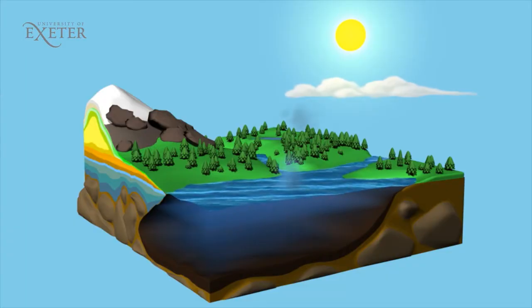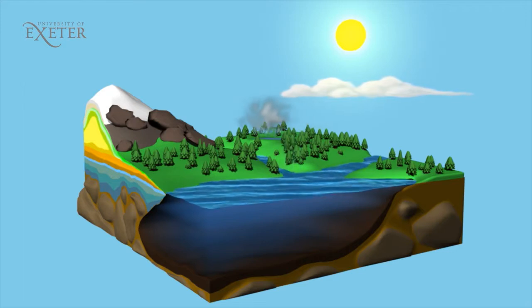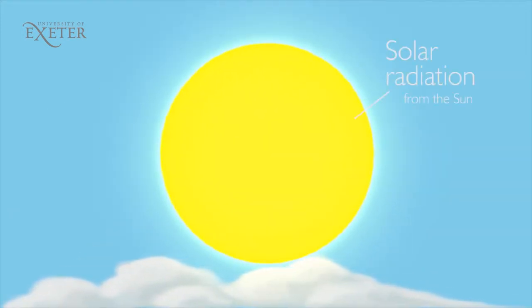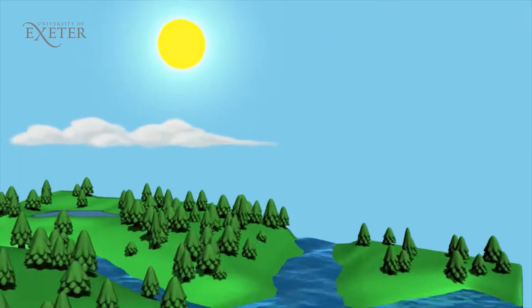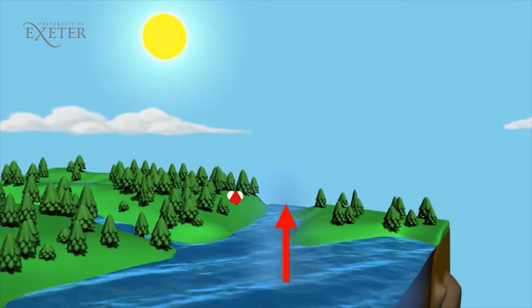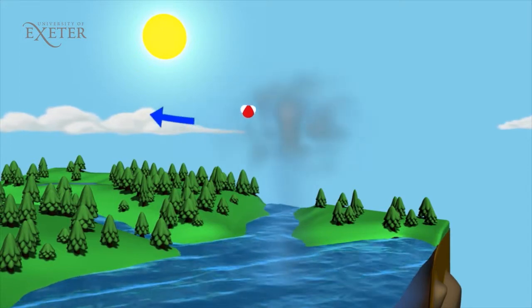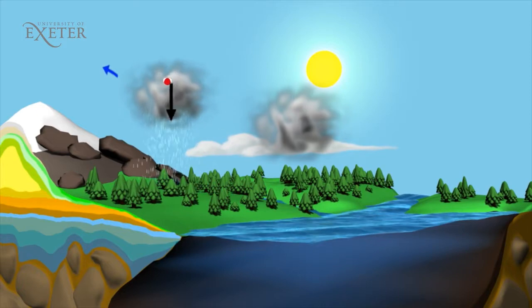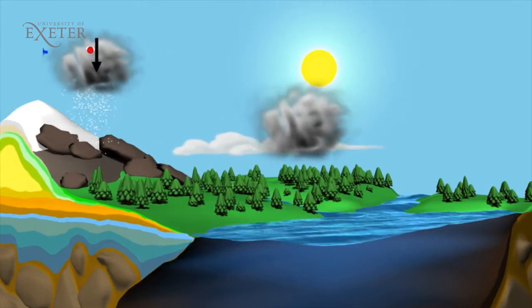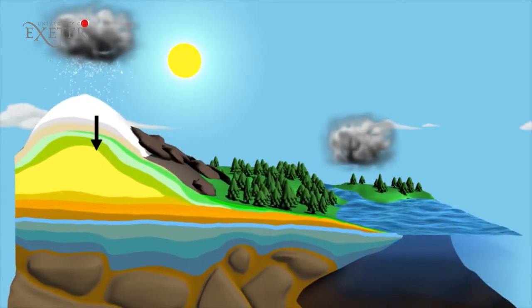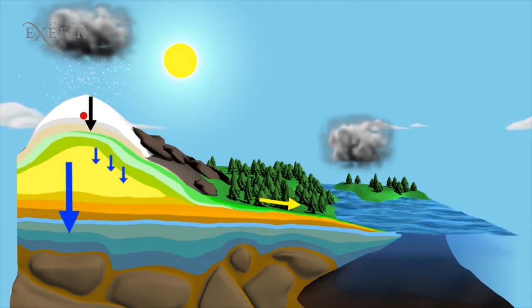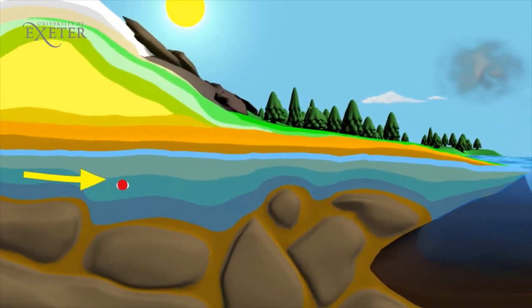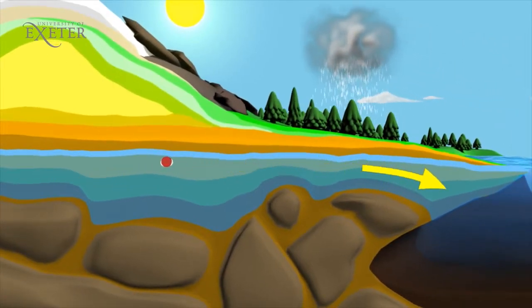Solar radiation causes water to evaporate from the surfaces of the hydrosphere — lakes, rivers and most importantly the oceans — and also from the biosphere, where water evaporates and transpires from green plants. The water vapour condenses in the atmosphere to form clouds, and water returns to the surface through precipitation, rain and snowfall. On reaching the surface, water returns to the hydrosphere, or if it is frozen as snow, it can enter the cryosphere.